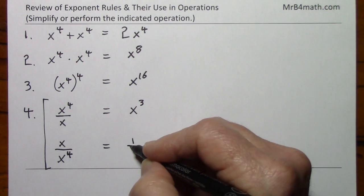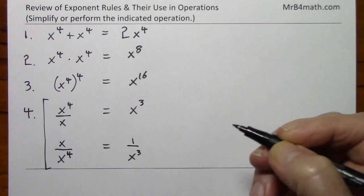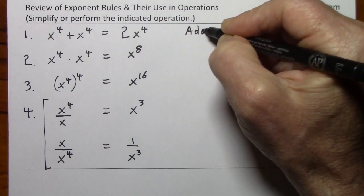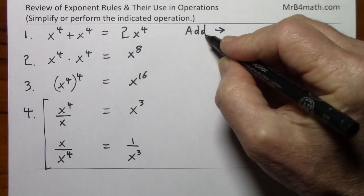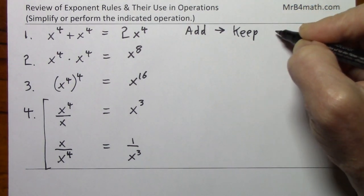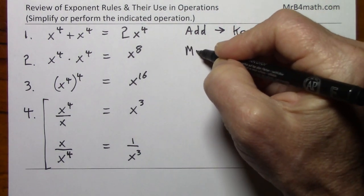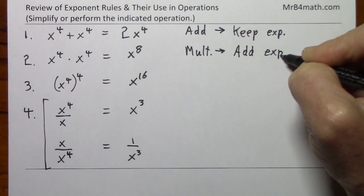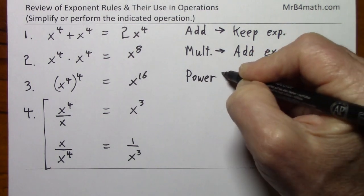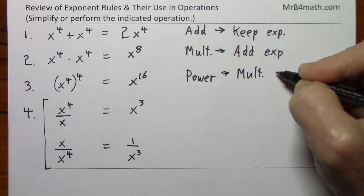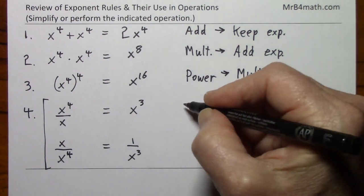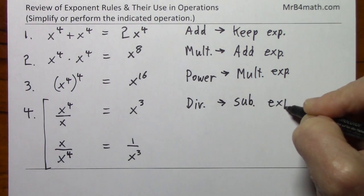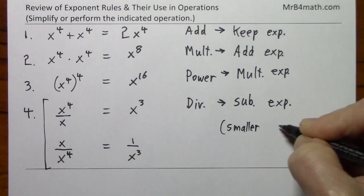So in this case you would get one over x to the third. So again: if you add like bases, you keep the exponent; when you multiply like bases, you add the exponents; when you raise to a power, you multiply the exponents; and when you divide, you subtract the exponents. And you have to remember: smaller from larger.